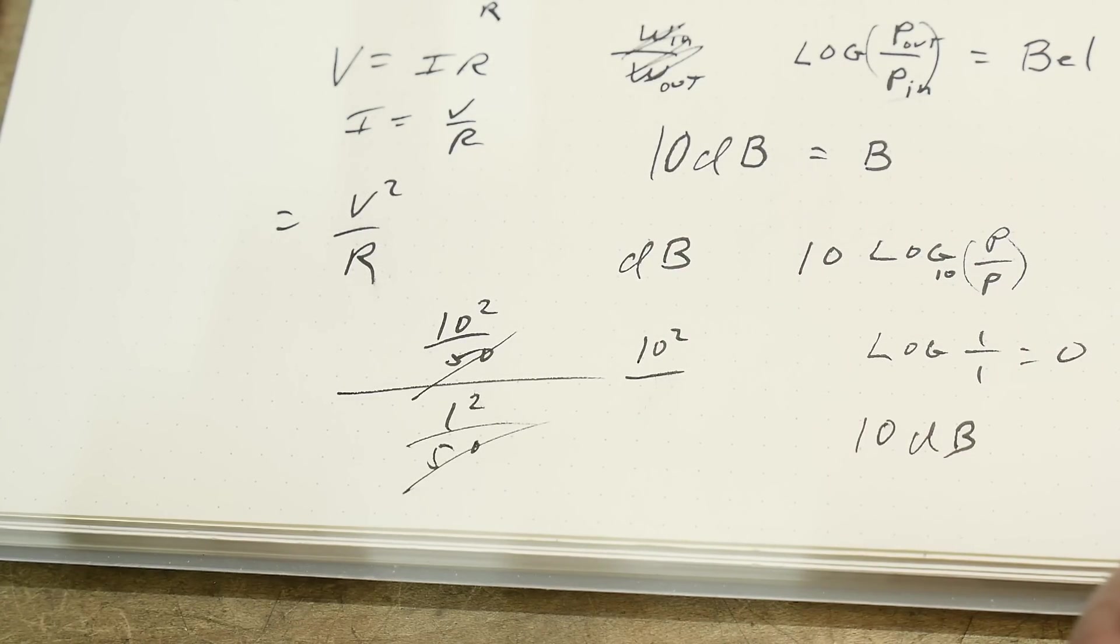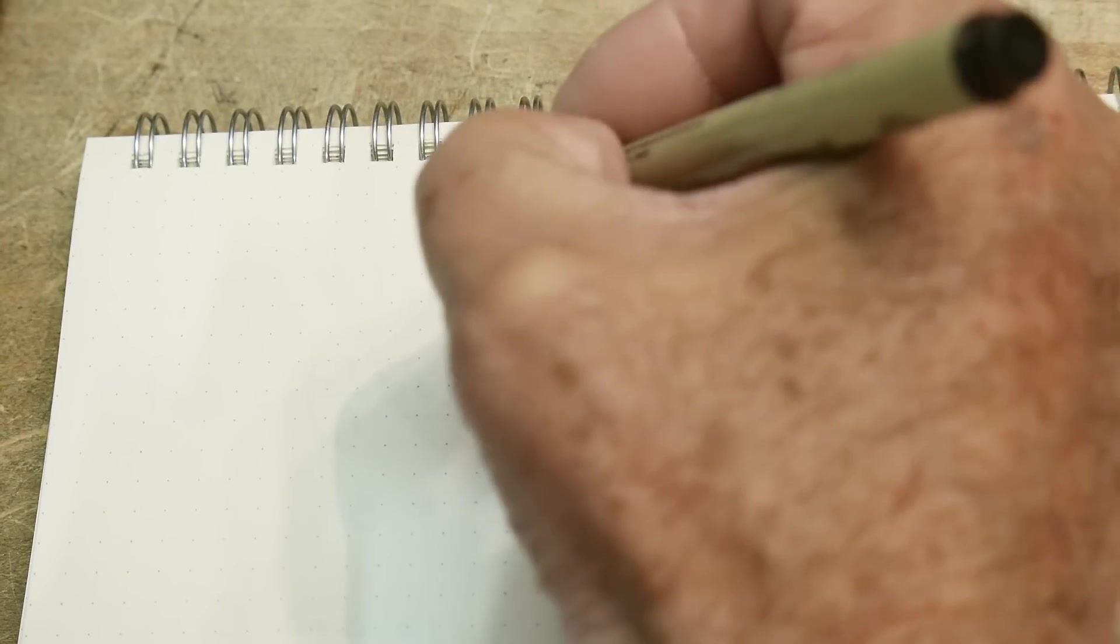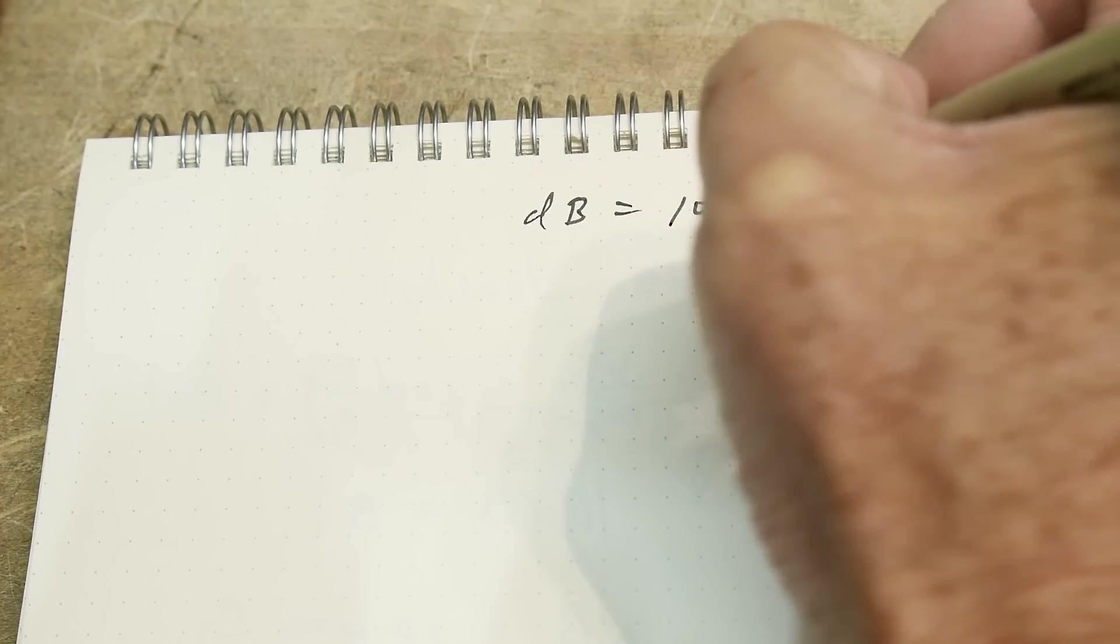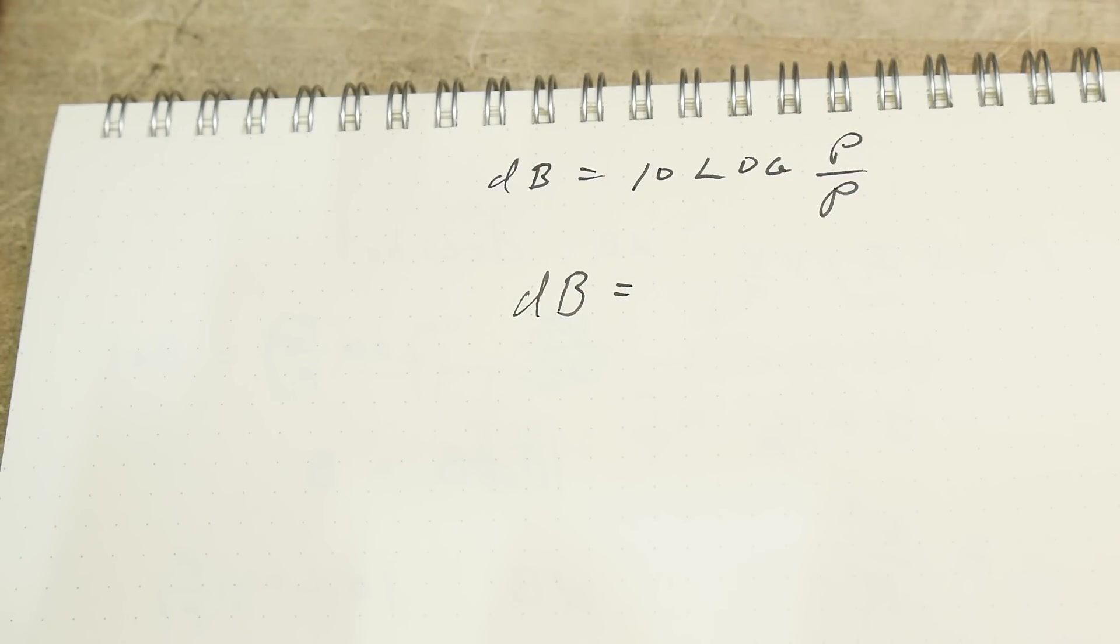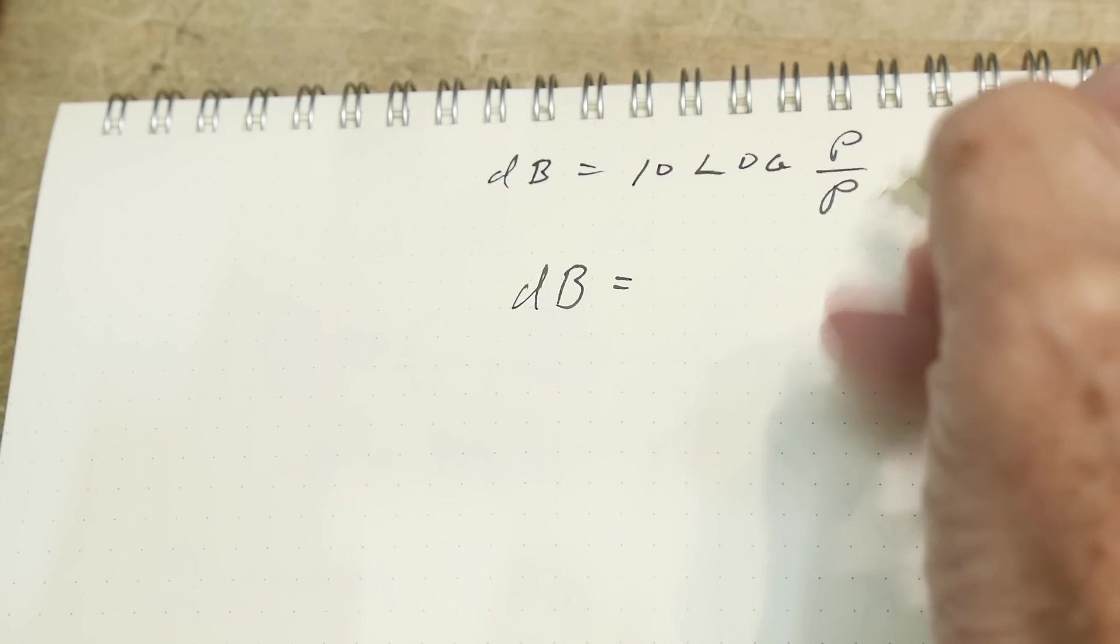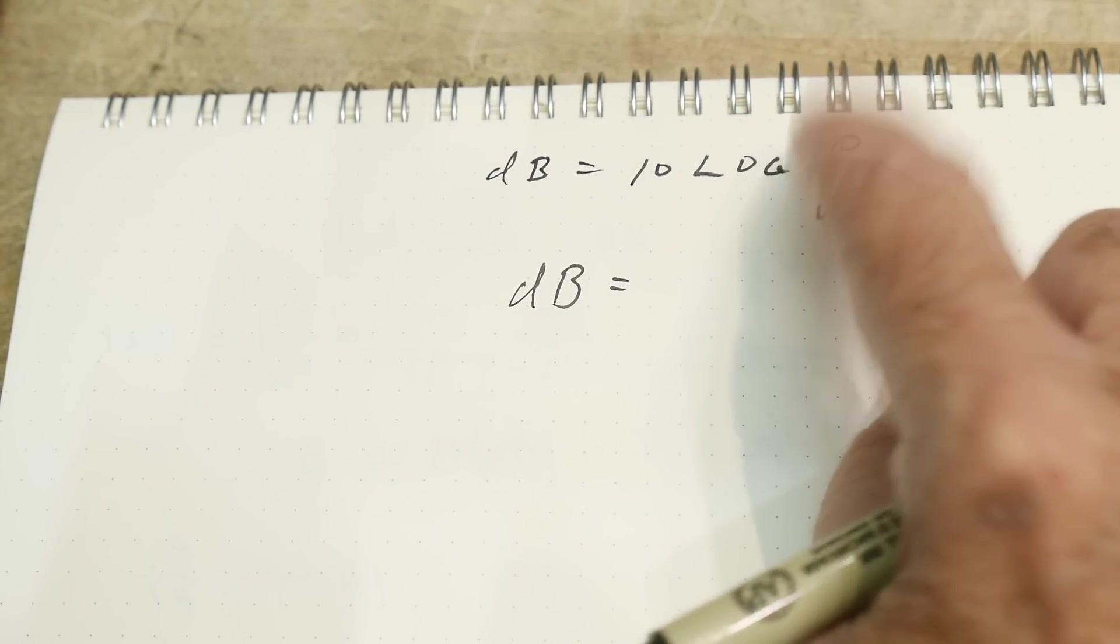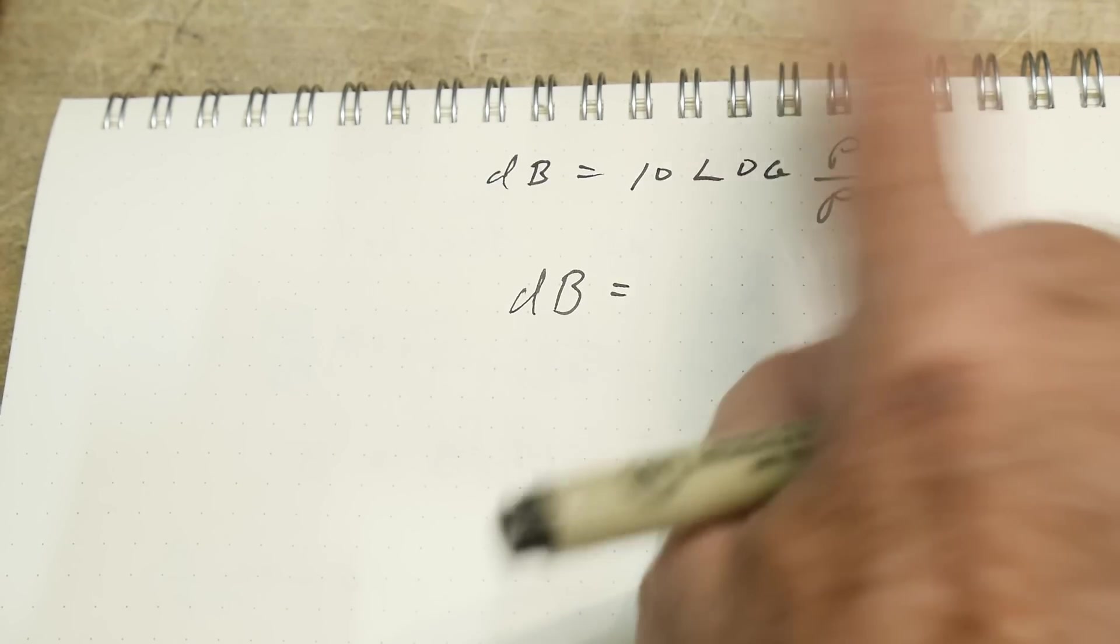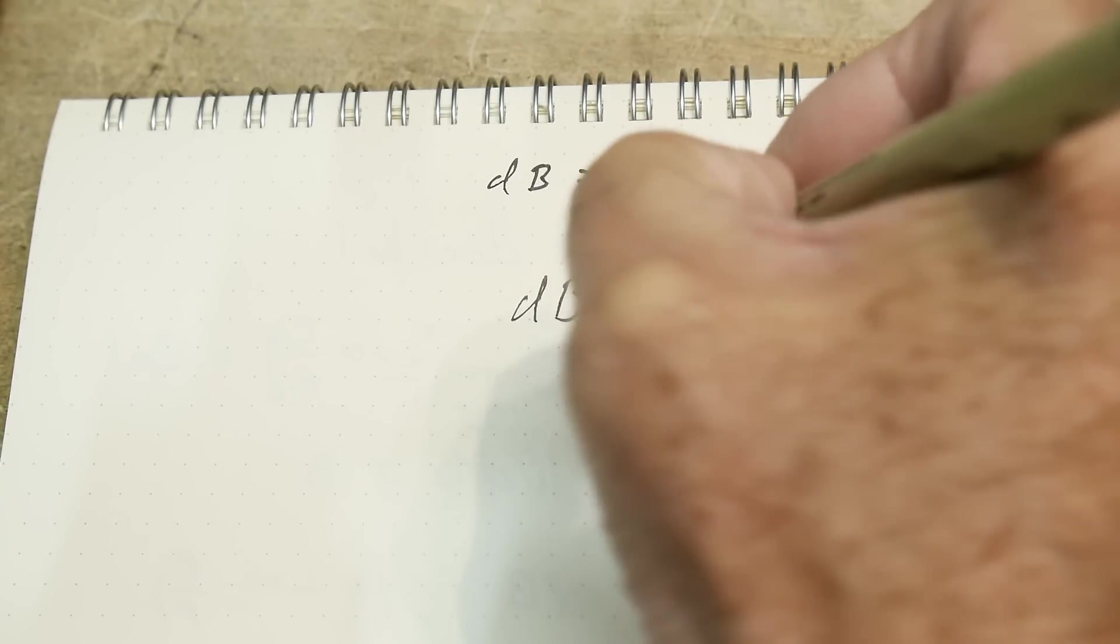Let me get a new piece of paper and rewrite these formulas. We have dB equals 10 log P over P, and dB is also, remember we have V squared over V squared. The way that logarithms work, if you have a square inside the logarithm you can move it outside as just a multiplier.